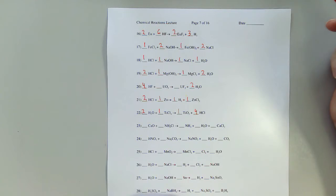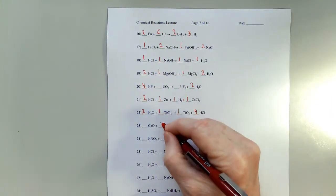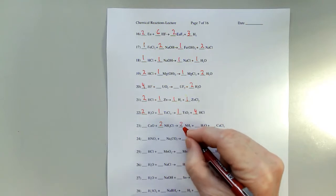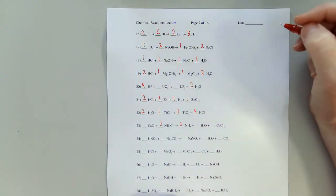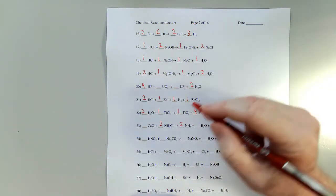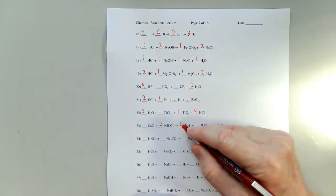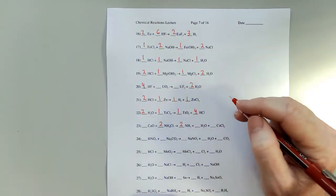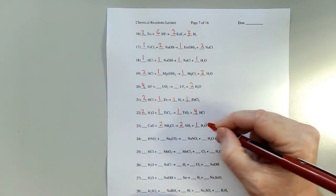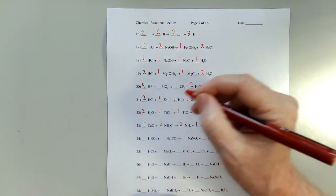In number 23, two chlorines and one, so I'm going to put a two there. The ammonium is breaking down into ammonia, so I'm going to need to put a two there. Two times four is eight hydrogens, two times three is six. Put a two there — that looks good. One, one, and one.